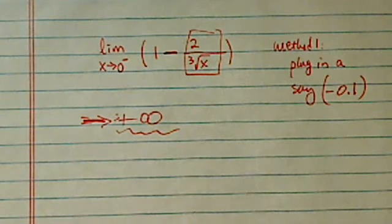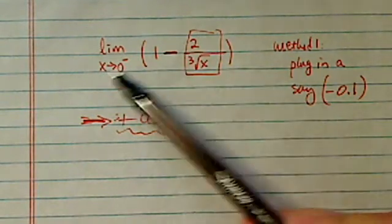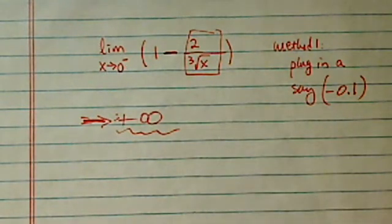Okay, so that's how we handle approaching from 0 on the negative side. Hope it's clear. Please comment on YouTube and let me know if it's helped you.